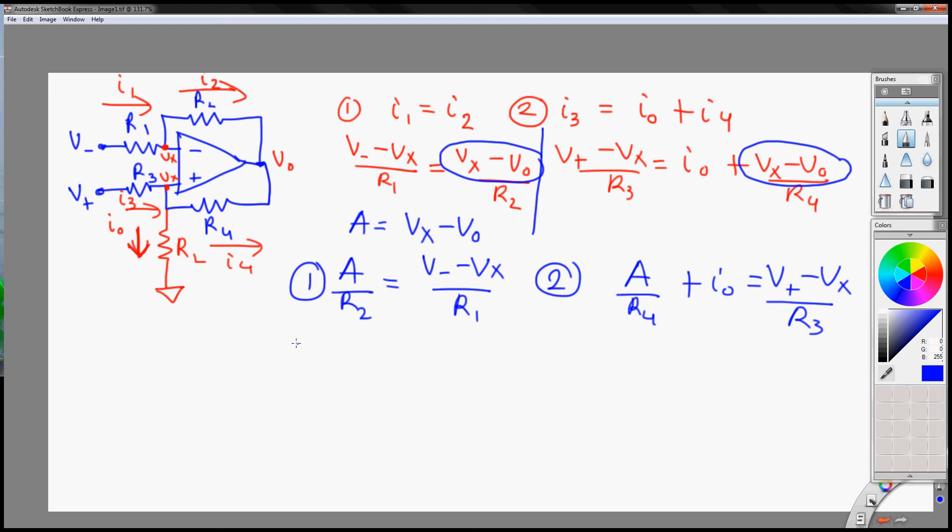And let's make another condition. We assume that R2 over R1, this ratio is equal to R4 over R3. If this is the case, then your equation 1 becomes A over R4, equal to V minus minus Vx over R3. Okay. I'm going to change color to green. So this is one equation. This is the other equation.